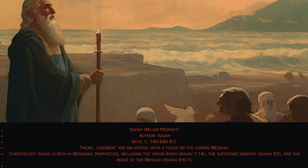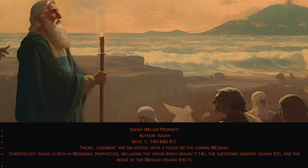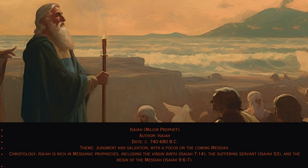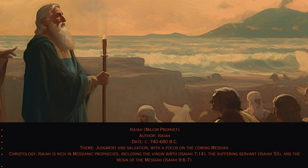23. Isaiah. Major prophet. Author: Isaiah, circa 740–680 B.C. Theme: Judgment and salvation, with a focus on the coming Messiah. Christology: Isaiah is rich in messianic prophecies, including the virgin birth (Isaiah 7:14), the suffering servant (Isaiah 53), and the reign of the Messiah (Isaiah 9:6–7).